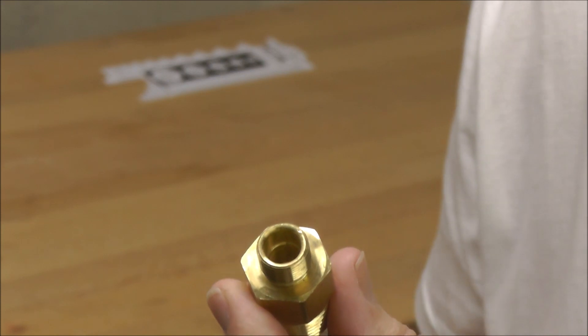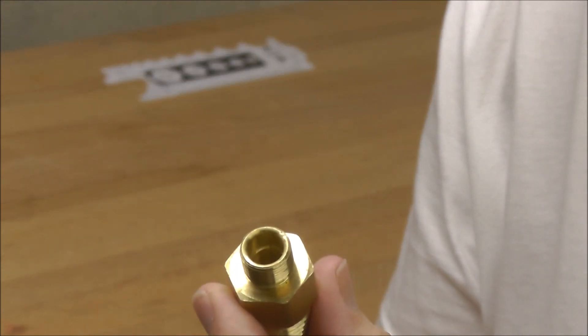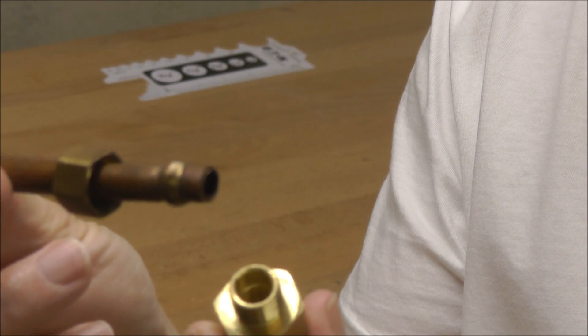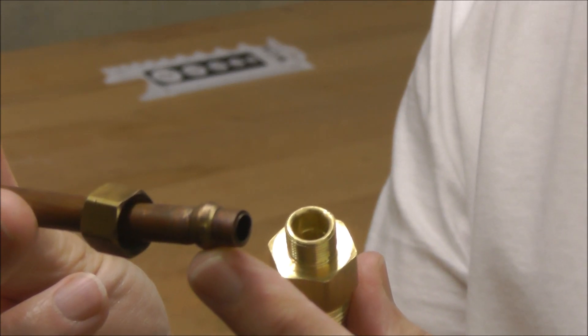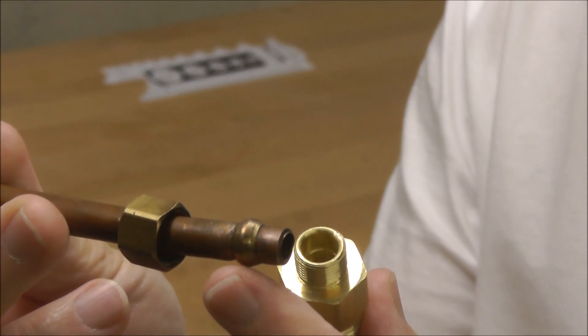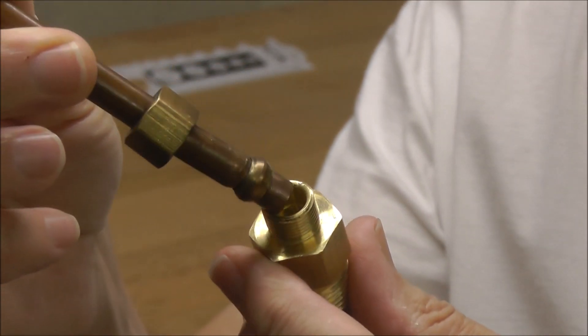You want to make sure that you slide the compression nut on first on your tube. You slide the little wedding band ferrule on there second. This has already been installed. And then you insert it into the fitting.